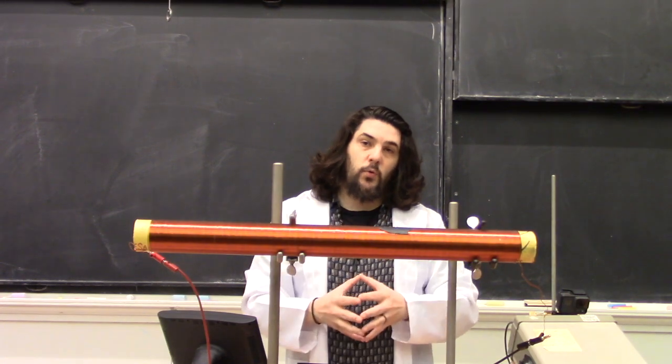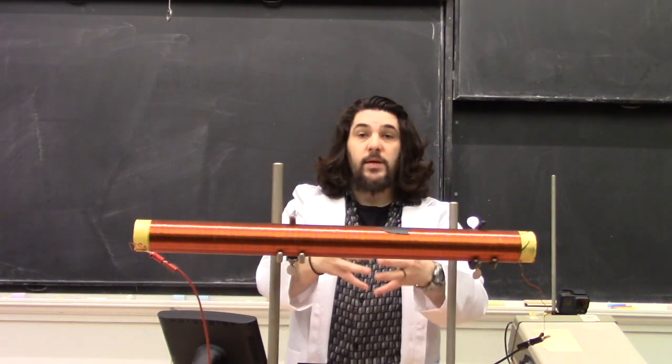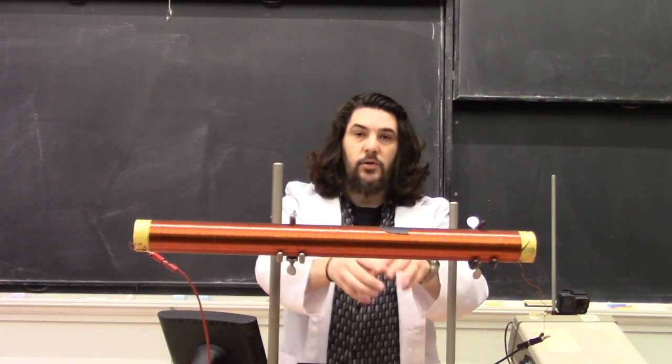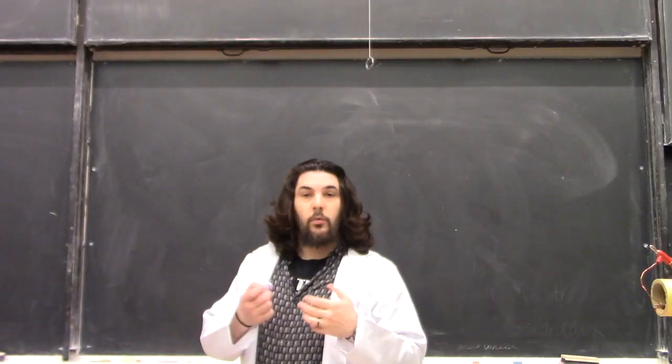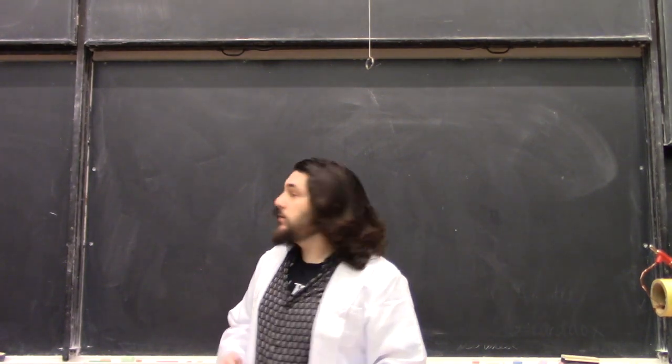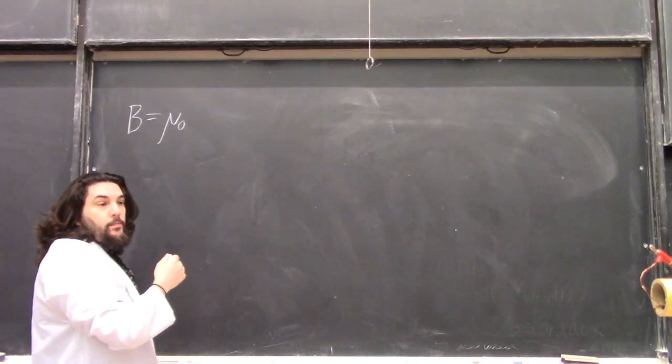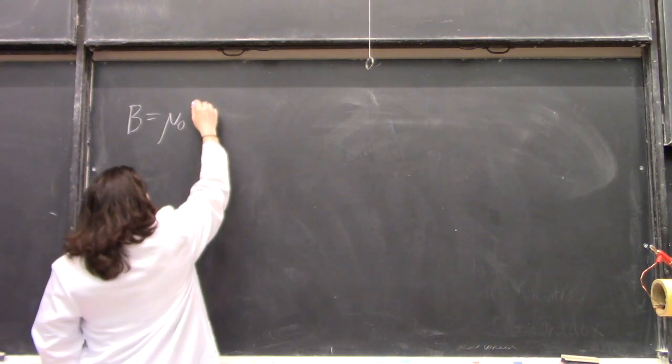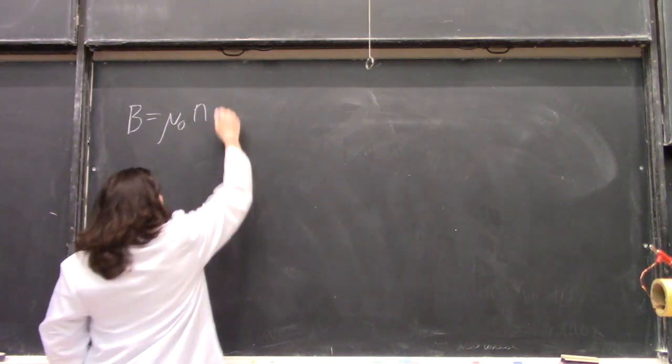A solenoid is a useful tool when it comes to generating and working with magnetic fields because the magnetic field inside the solenoid, when a current is running through it, tends to be pretty uniform. When you run the calculations for a solenoid, the internal magnetic field should look like this: B equals μ₀, the magnetic permeability of free space, times the density of windings times the current.